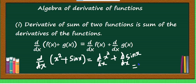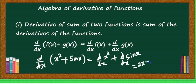What is the derivative of x square? It is 2x — applying n times x to the power n minus 1 gives 2 times x to the power 1, that is 2x. Plus, what is the derivative of sin x? It is cos x. So the answer is 2x plus cos x. This is the method of applying this rule.